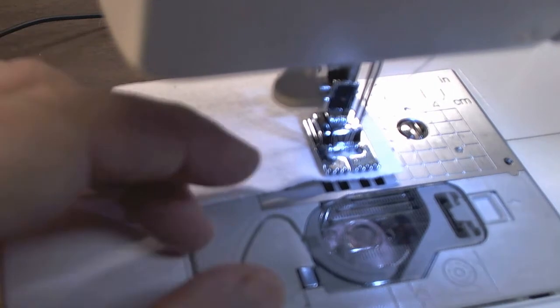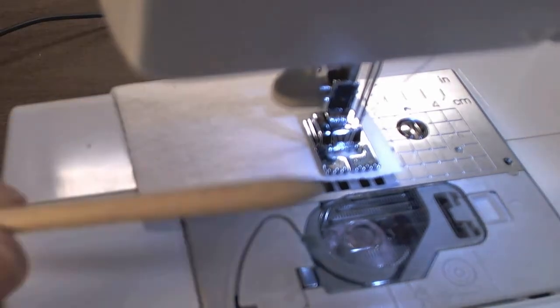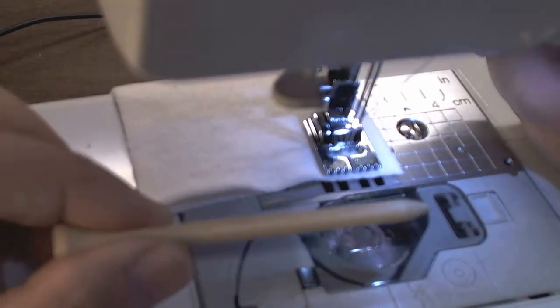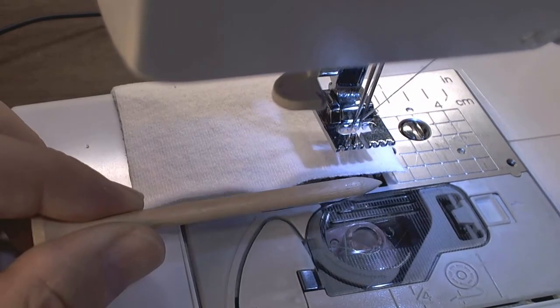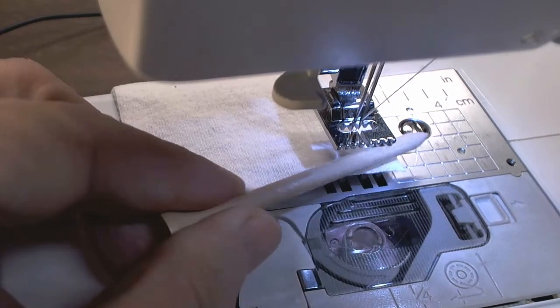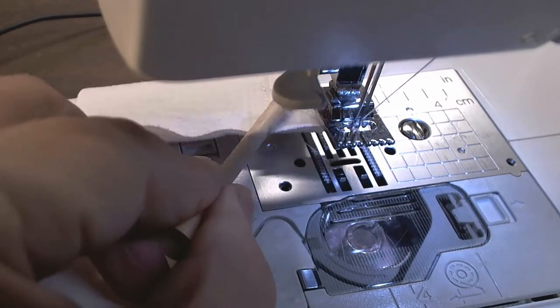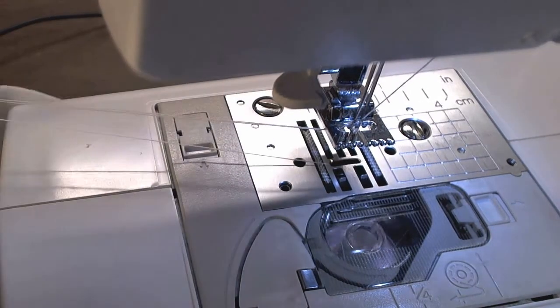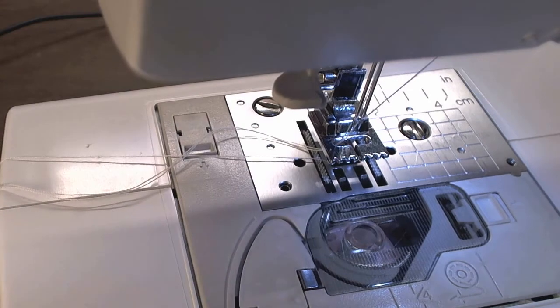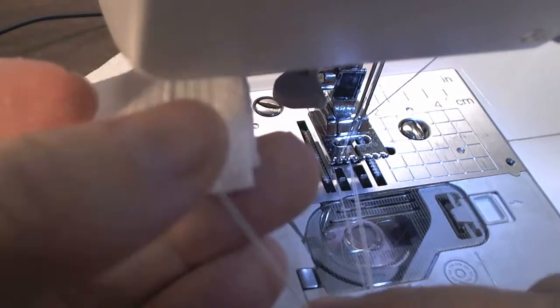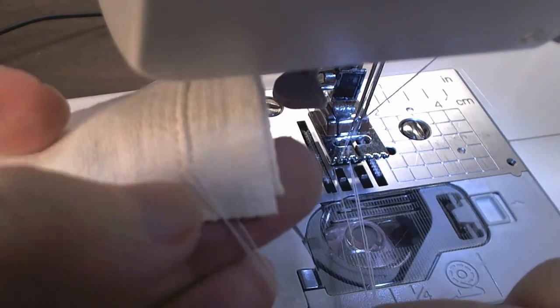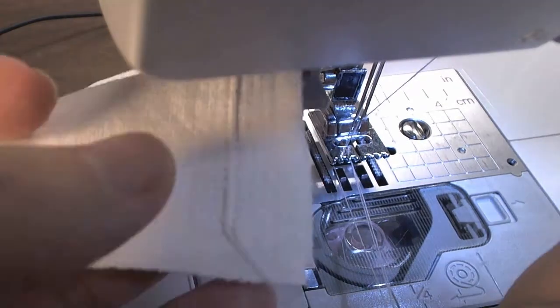Now with the twin needle, when I finish, I raise up the presser foot all the way. And I take a tool and I grab all the threads and pull it to the side like this. So you don't pull on this and distort the last couple stitches in your pin tuck.